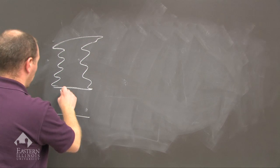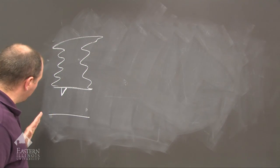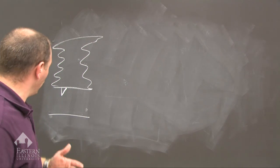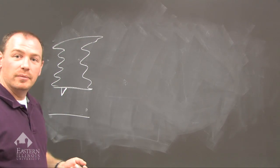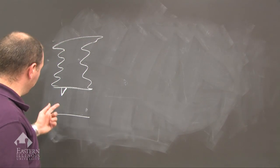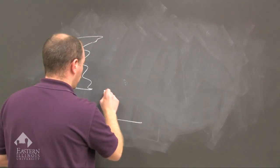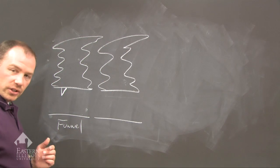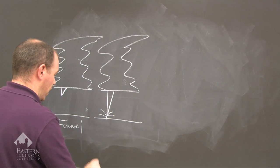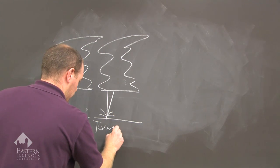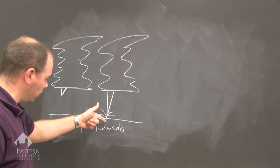The first stage is called the funnel stage. The updraft is essentially a tornado. What we have is a funnel that comes popping right out of the bottom of a wall cloud. The second stage is when that funnel actually touches the ground. When it touches the ground, then we have a tornado.